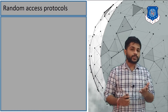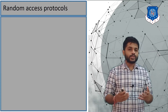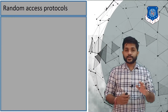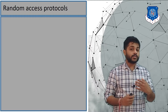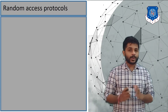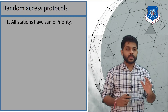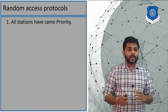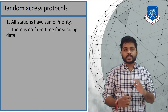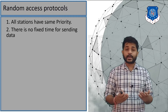Pure Aloha and slotted Aloha are part of the random access protocol. In the random access protocol, when there is a collision in the network, devices will wait for some random amount of time. All stations have the same priority — there is nothing like master or slave. There is no fixed time for sending data; any station can send data at any time they want.